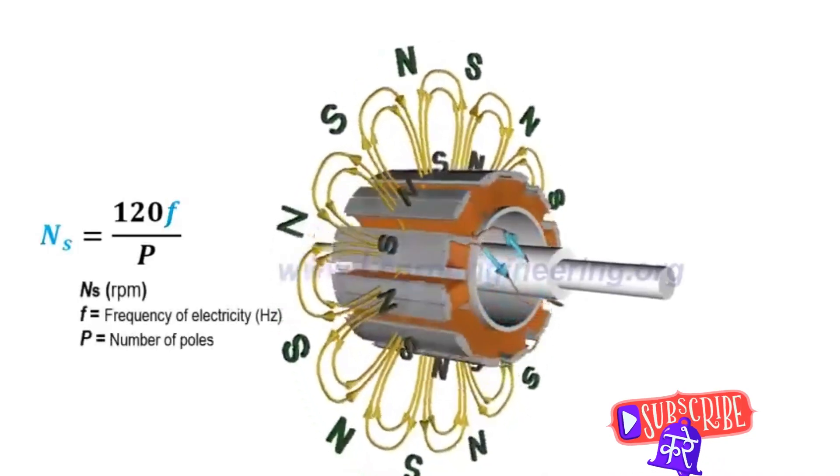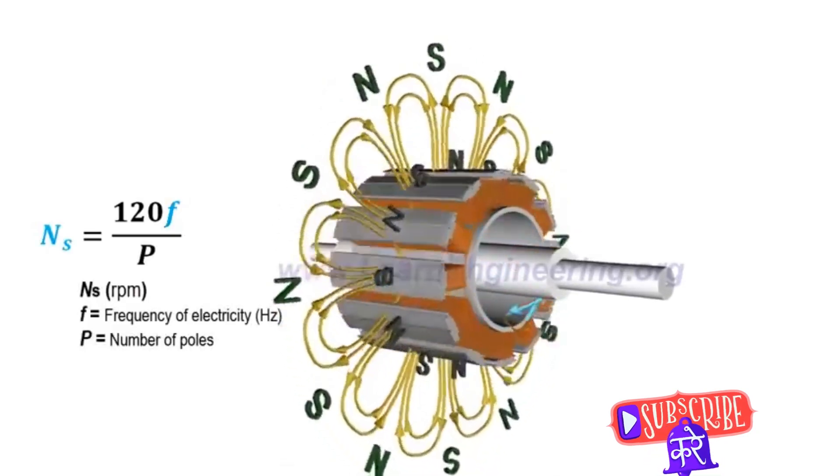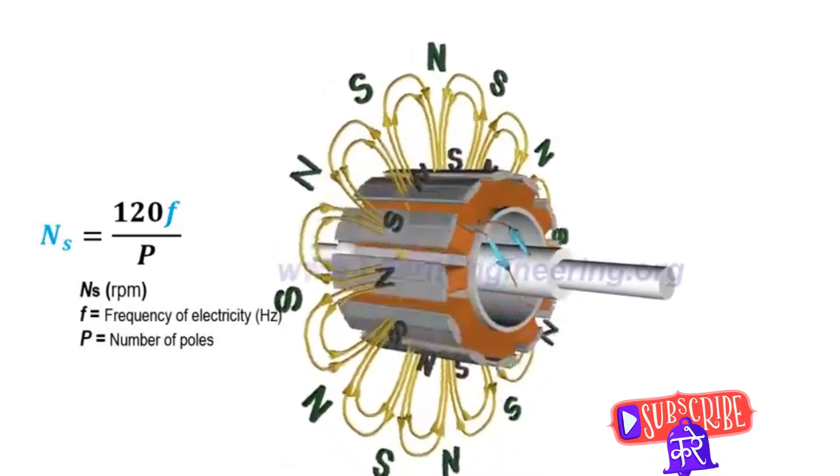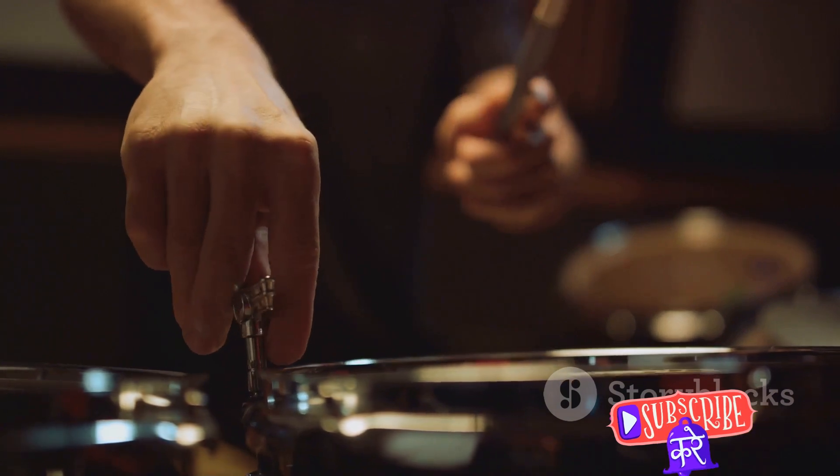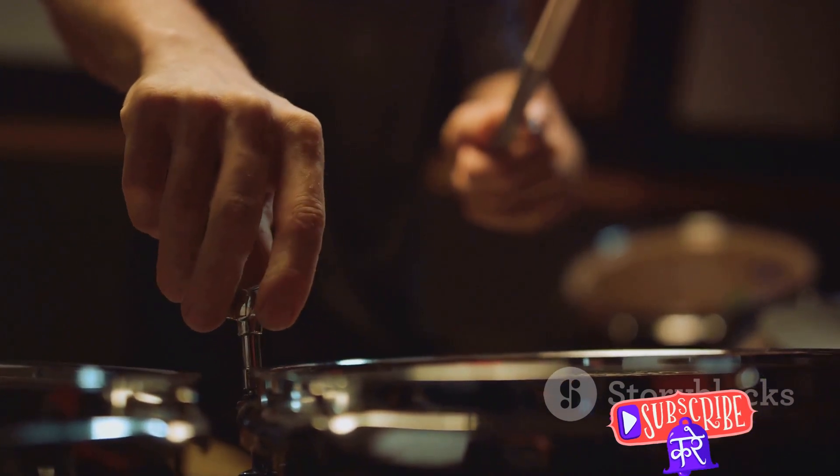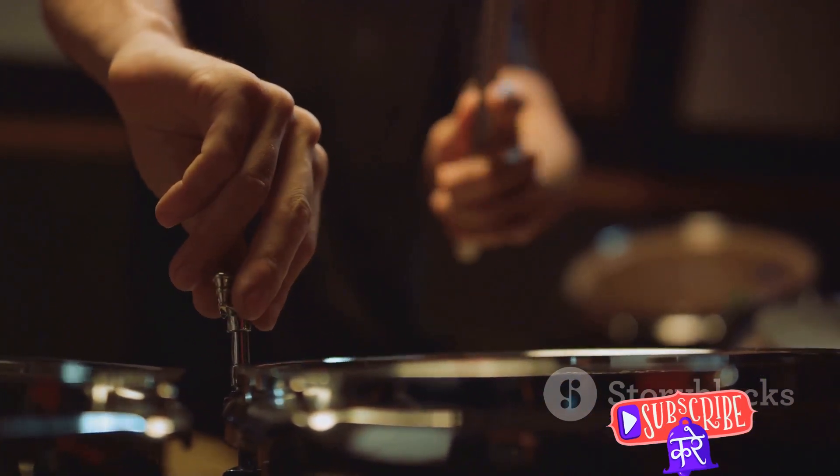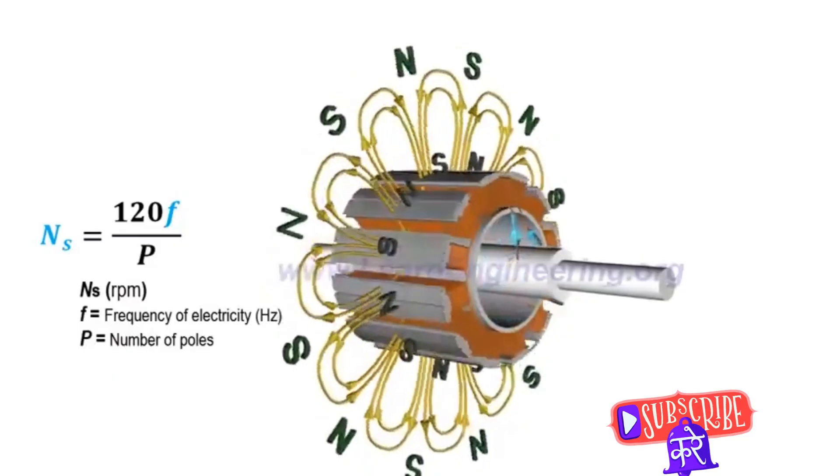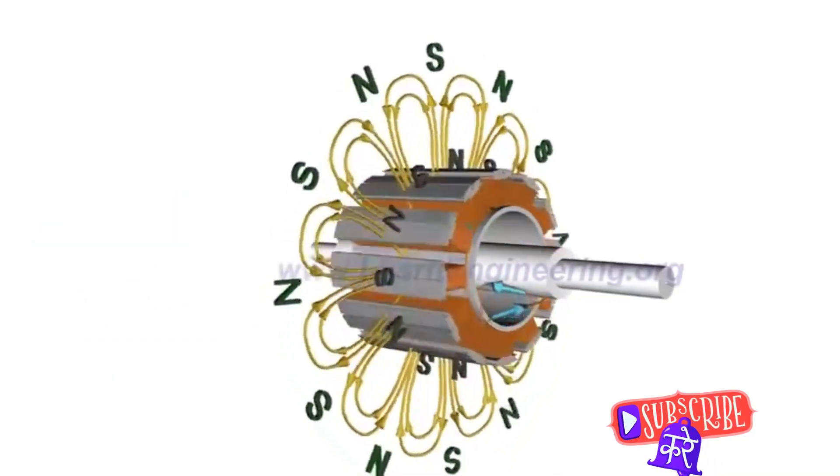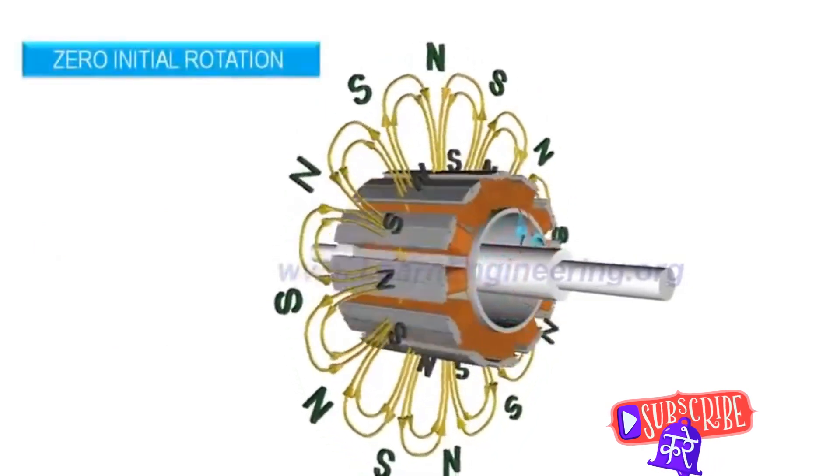This is because the speed of a synchronous motor is directly linked to the frequency of the power supply. Imagine this: you're at a concert, the drummer sets a beat, and the rest of the band follows suit, maintaining the same rhythm throughout the song. Similarly, in a synchronous motor, the rotating magnetic field set by the power supply is like the drummer's beat.